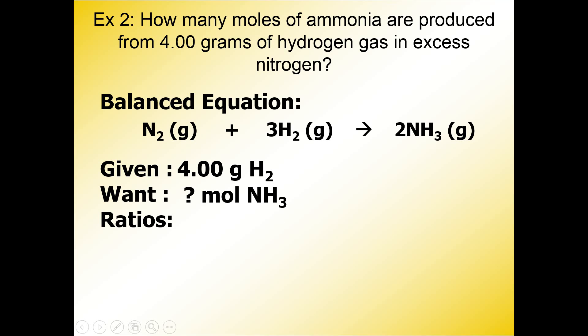When it comes to writing ratios, what you need to do is look for some clues in the given and in the want. In the given and in the want, when you see two different substances, like H2 versus NH3, we're going to take those pieces of the balanced equation, the H2 and the NH3, and we're going to write a mole-to-mole ratio.